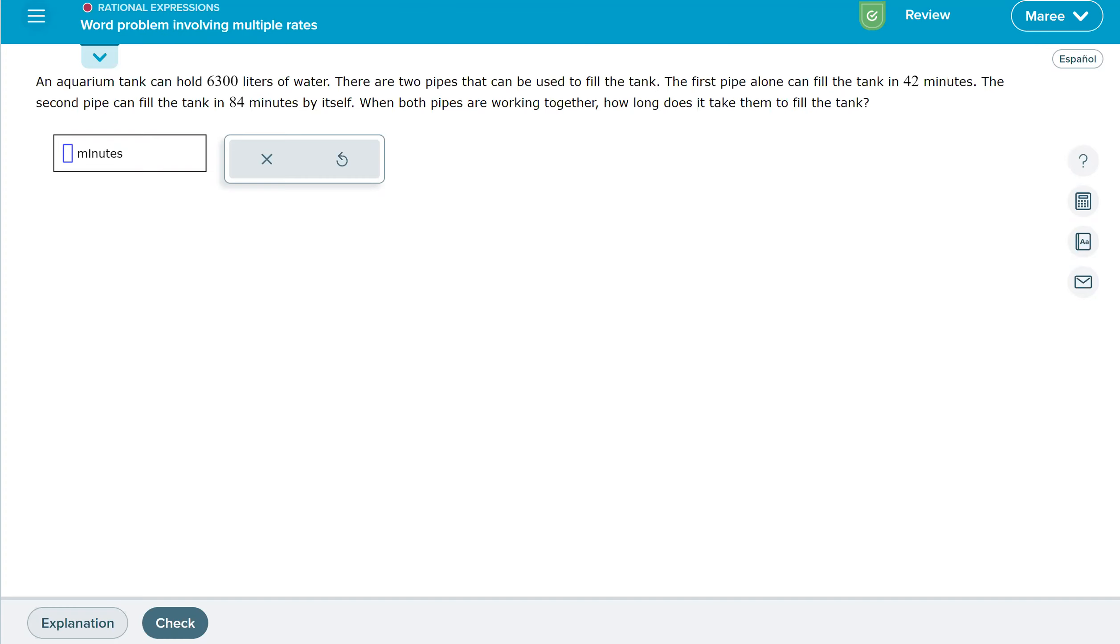This is called a work problem involving multiple rates. We'll probably have to figure out rates of each one and then maybe add them together. An aquarium tank can hold 6,300 liters of water.